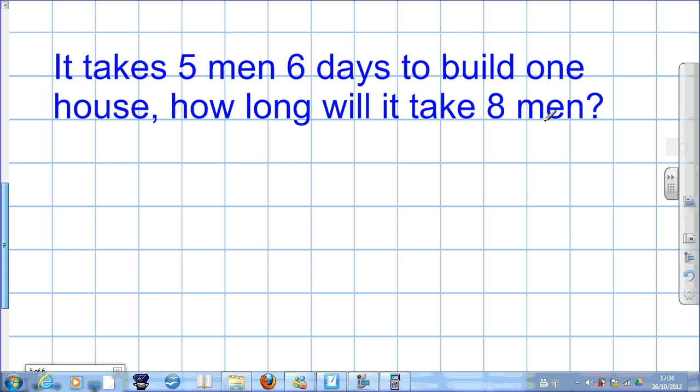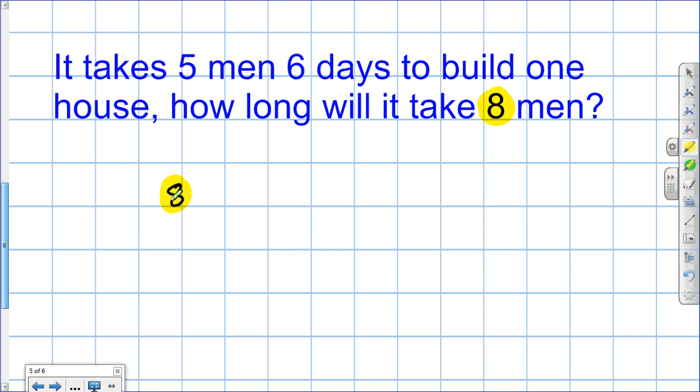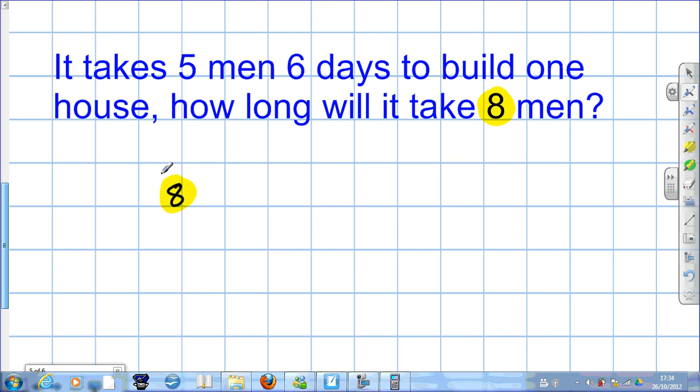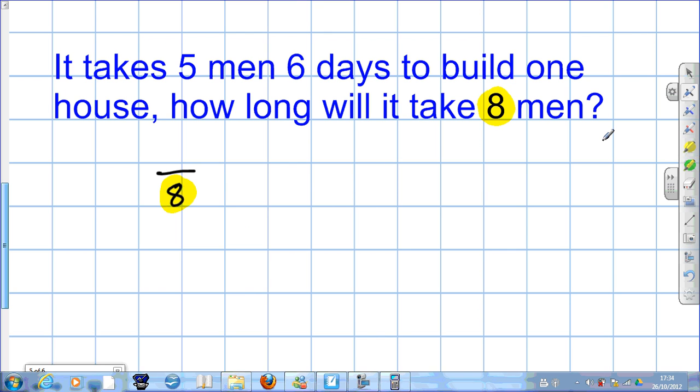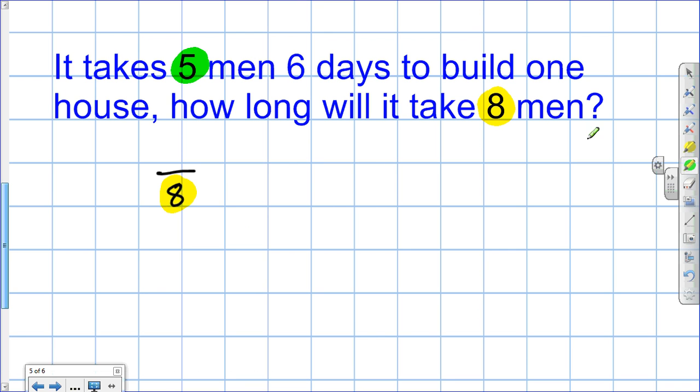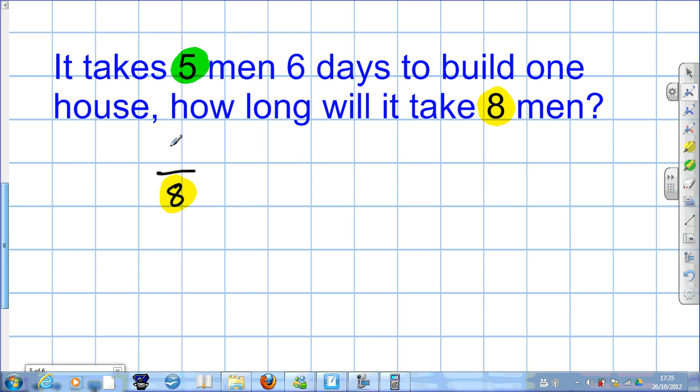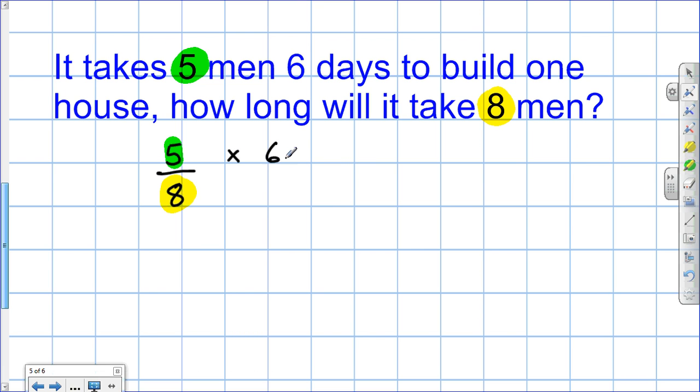So our key bit of information, the bit about which we're answering, we write down first. Yeah, as before, it's always the first thing we write. But it becomes the denominator, the bottom part of the fraction. The other bit of information with the same units, the five, goes on top. It becomes the numerator. And then, by six days, let's put those units in.